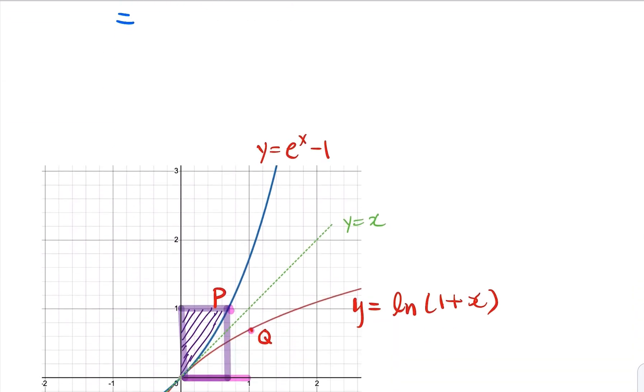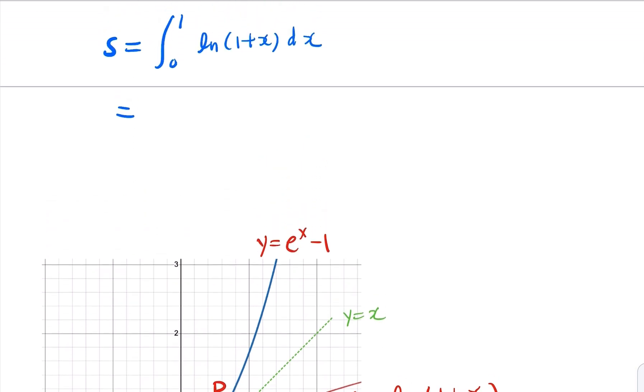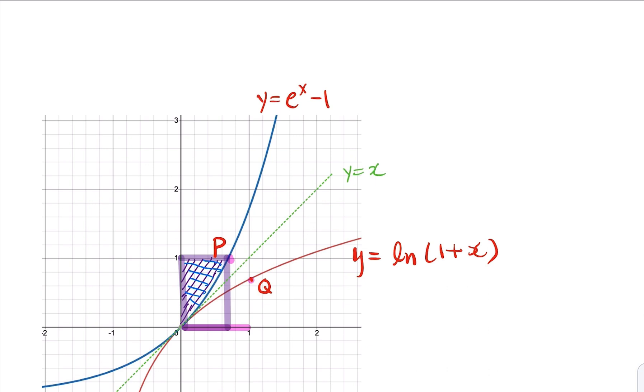In this diagram, the shaded area here, that's going to be the rectangle which is, notice that this position here is log 2.